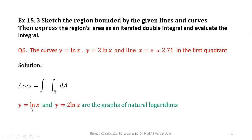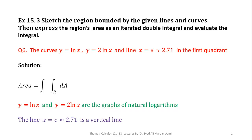In this question, y is equal to natural log of x and y is equal to 2 natural log of x are the graphs of natural logarithms. The line x is equal to e, where e is approximately equal to 2.71, is a vertical line. In the next step we will learn the graphs of y is equal to natural log of x.